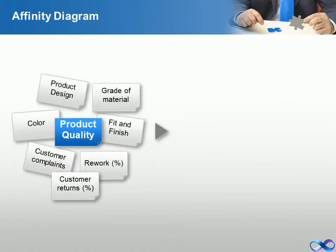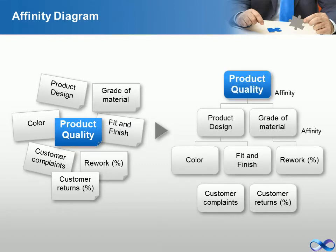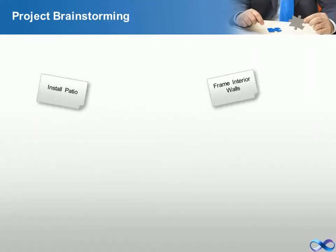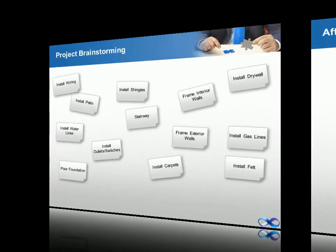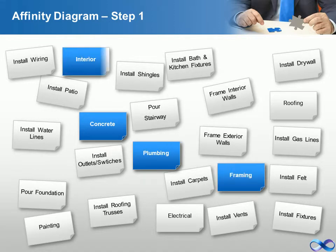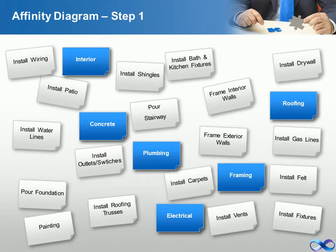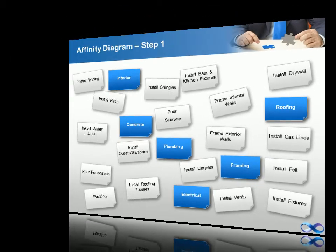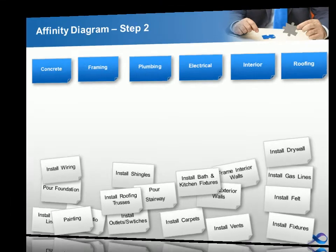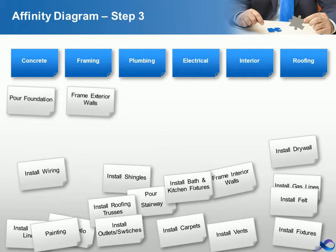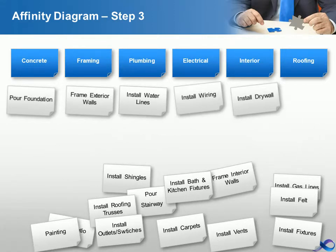An affinity diagram is a tool to organize brainstorming ideas and large amounts of data in a group. Let's brainstorm the required activities. The first step in developing an affinity diagram is to identify which of the generated ideas are categories and which are not. Now let's place the categories at the top to sort the respective elements beneath it, and place the respective elements beneath the categories they belong to.